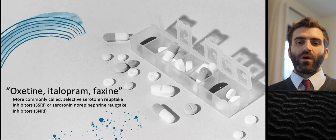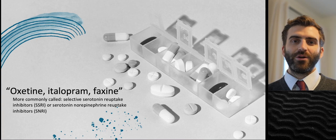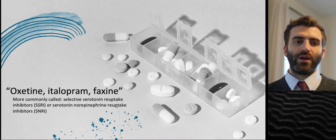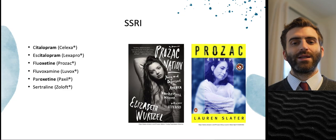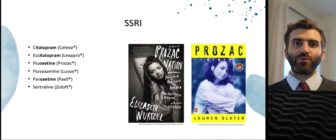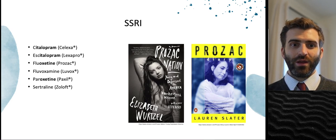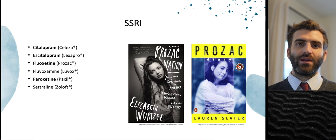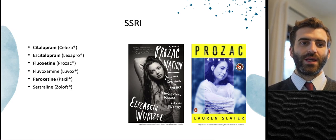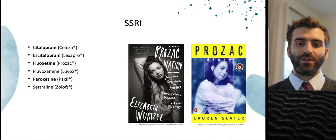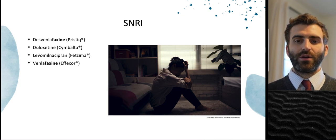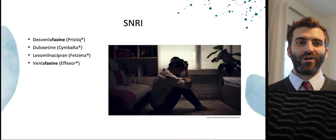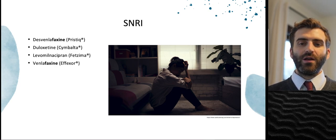The first classes are SSRIs (selective serotonin reuptake inhibitors) and SNRIs (serotonin norepinephrine reuptake inhibitors). There's some commonality in naming — suffixes like -oxetine, -italopram, and -faxine. Fluoxetine (Prozac) was the first SSRI, approved in 1987, and had a major impact on society. SSRIs are selective to serotonin, while SNRIs also work on norepinephrine. There are four SNRI medications and they are also commonly used.